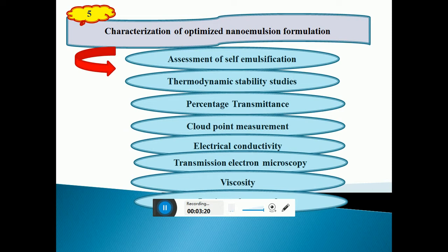We can characterize the developed formulation by assessing the self-emulsification. Thermodynamic stability studies can be performed, including cooling and heating cycles. Percentage transmittance can be measured. Cloud point measurement will be taken, and electrical conductivity can be used to identify the type of emulsion. We can perform transmission electron microscopy studies to find the exact droplet size and also measure the viscosity of the nano-emulsion.